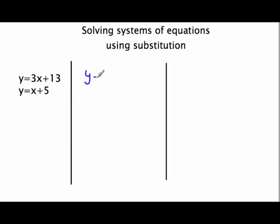So let's just put the first one y equals 3x plus 13. And then we'll put the other equation y equals x plus 5 in the third column.